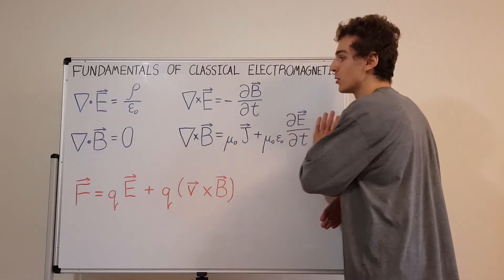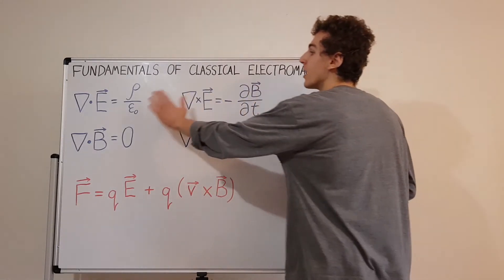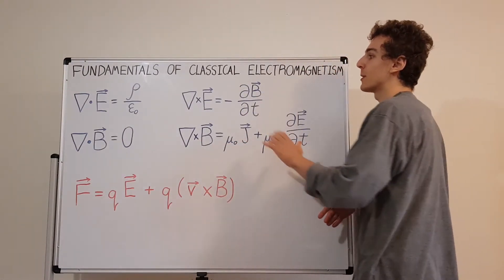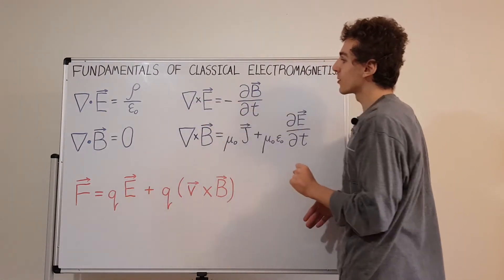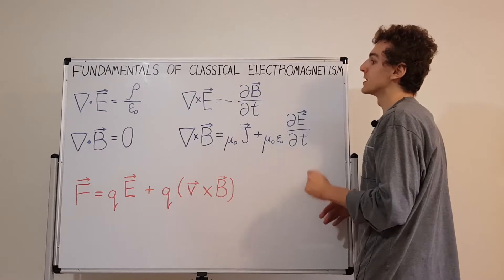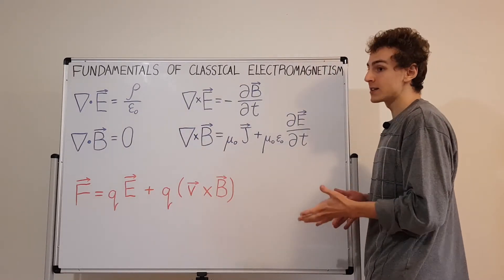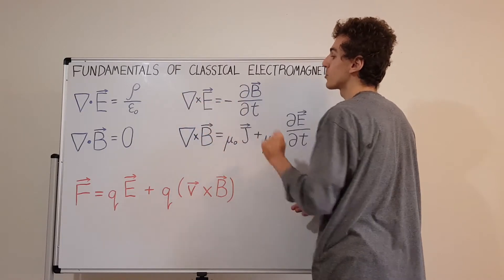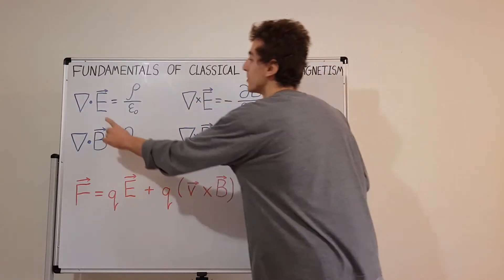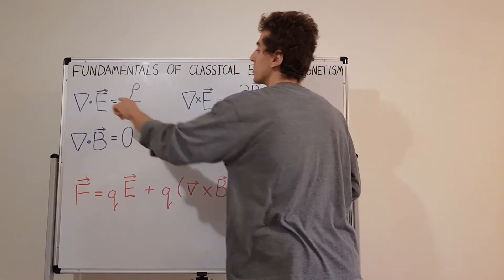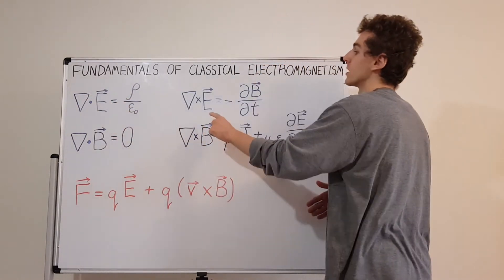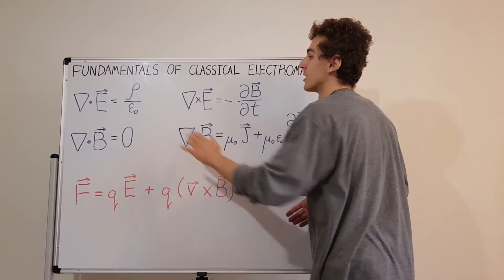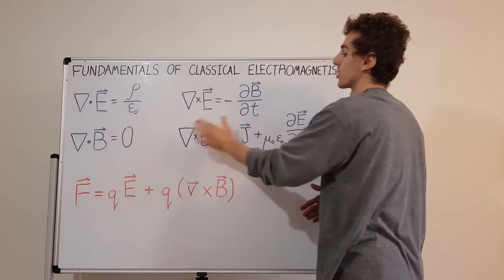These blue equations are Maxwell's equations in differential form. You might be able to see this upside-down triangle — that's called the del operator, or nabla. Sometimes it's being applied with the cross product, occasionally with the dot product. With the dot product this is divergence; with the cross product this is curl. So we have divergence, divergence, curl, curl.